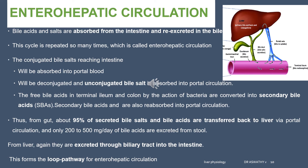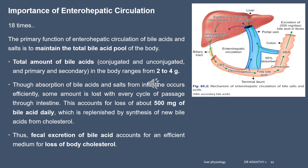95% of the secreted bile salts are transferred back to the liver, so only 200 to 500 mg of bile acids are excreted through the stool. These bile salts are recycled about 18 times before their final elimination through faeces. The faecal loss is about 500 mg of bile acid daily. There are 2 to 4 grams of total bile acids in the body, but 500 mg will be excreted daily, and this 500 mg will be formed from cholesterol. Therefore, faecal excretion of bile acid is an efficient medium for the loss of body cholesterol — if you want to reduce cholesterol, you increase faecal excretion of bile acid, which reduces the bile acid pool and causes the liver to synthesize more bile acid from cholesterol.